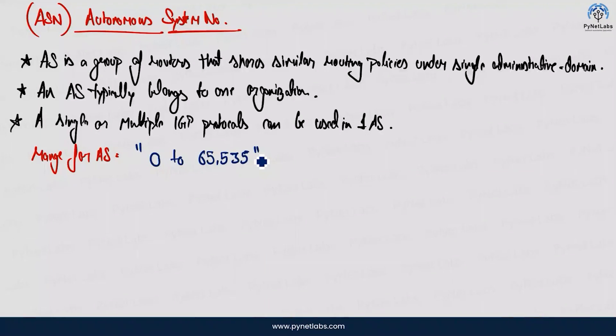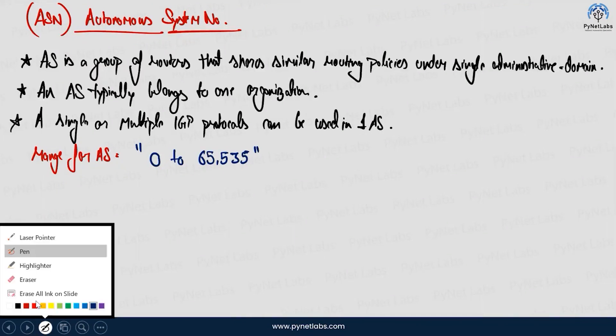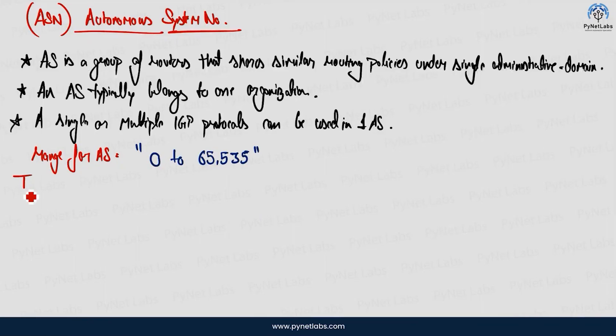So there are two types of autonomous systems which you will usually find. We do have the public ASN and we do have the private ASN. So let's try to see the types of ASN. So talking about the types of ASN, there are two types of ASN you will usually see. The first type of ASN you will find is the public ASN.